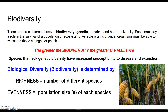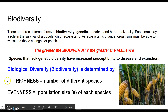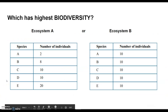Biological diversity is determined by two things. If you think back to our parking lot biodiversity lab, we measured richness — that was just the number of different species. But then we also looked at evenness, the population size or number of each of those species. The Shannon-Wiener Biodiversity Index uses both of those measures.